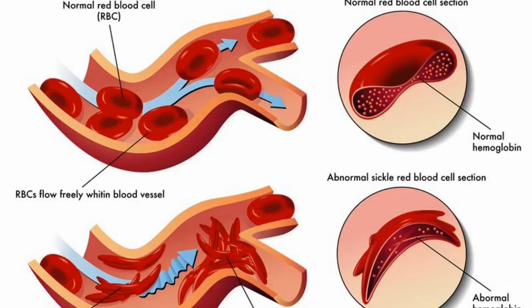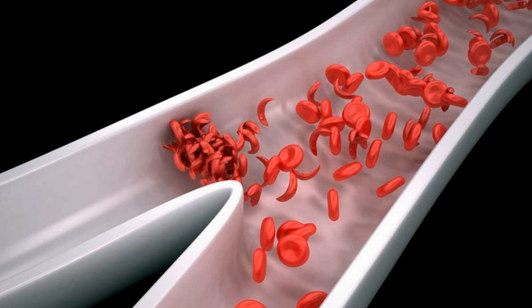Sickle cell disease is a common hereditary hemoglobinopathy caused by a point mutation in beta globin that promotes the polymerization of deoxygenated hemoglobin, leading to red cell distortion, hemolytic anemia, microvascular obstruction, and ischemic tissue damage.